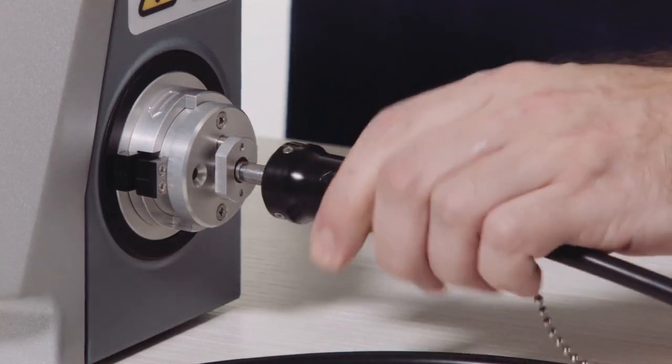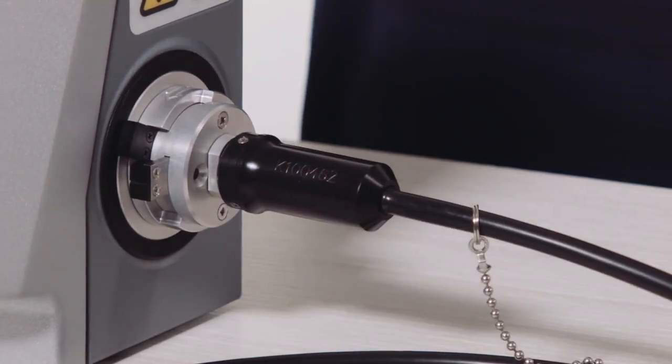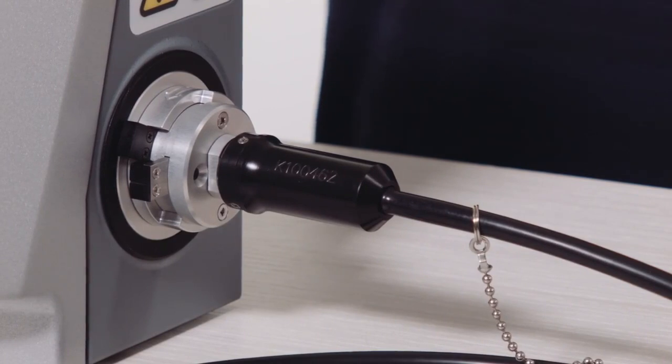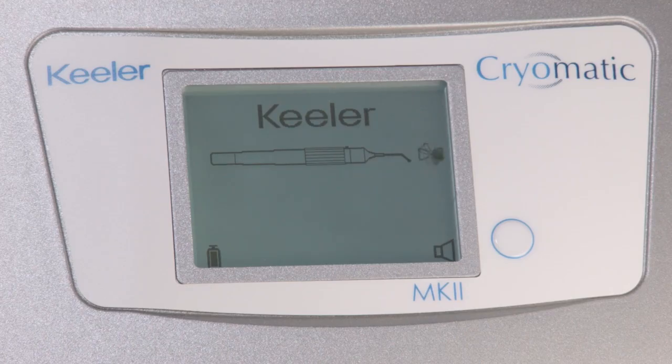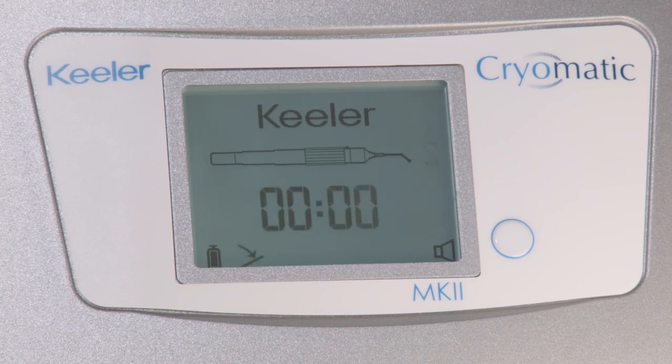Connect the cryo probe by aligning the coupling on the spigots and pushing to a positive click. The system will automatically initiate a 90-second purge cycle. Three short beeps signal that the purge cycle is complete. The equipment is now ready for use.